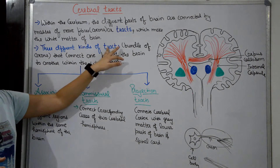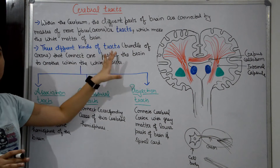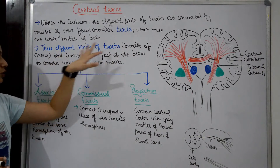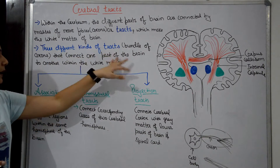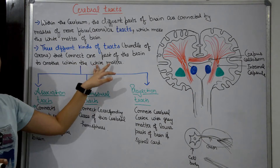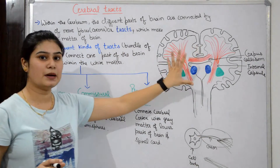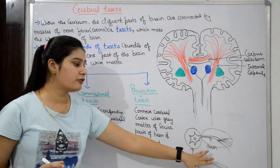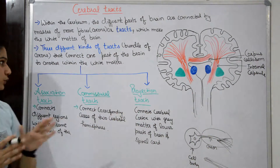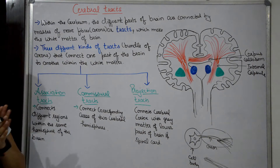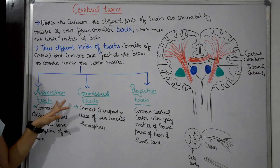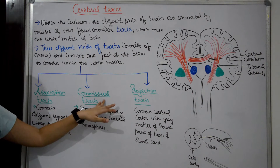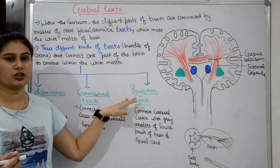So there are three different kinds of tracks. Cerebral tracks are of three types. First is association tracks, second is commissural tracks, and third is projection tracks.